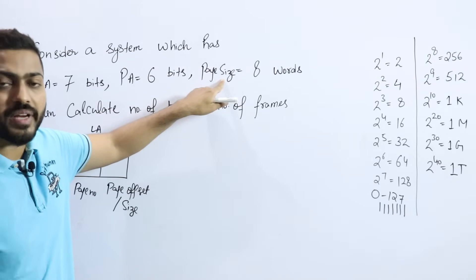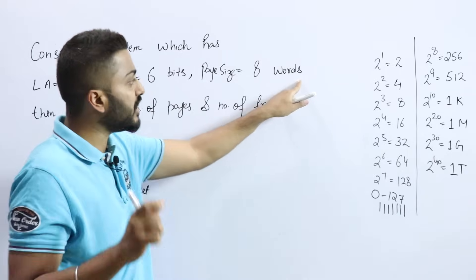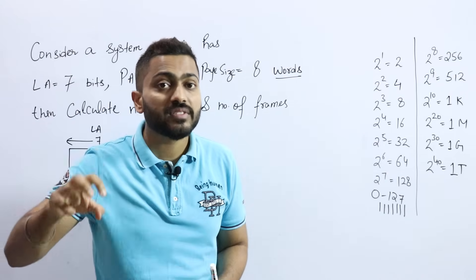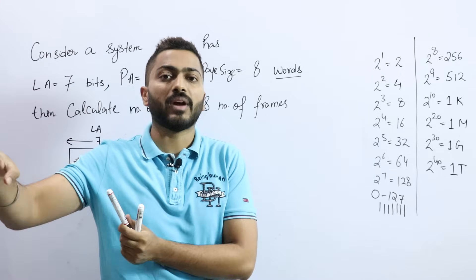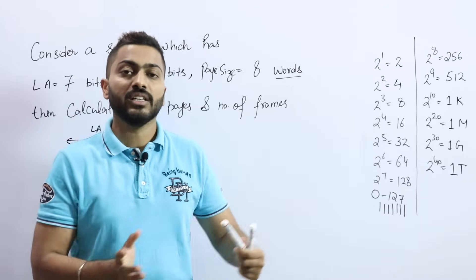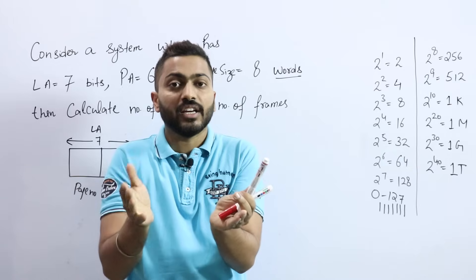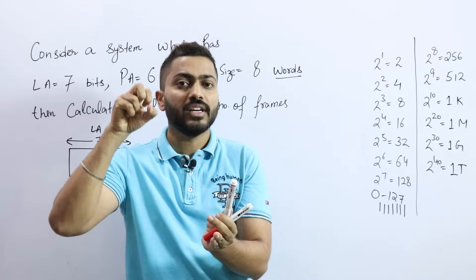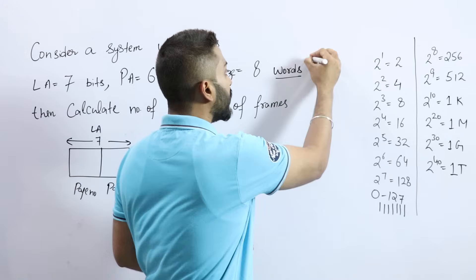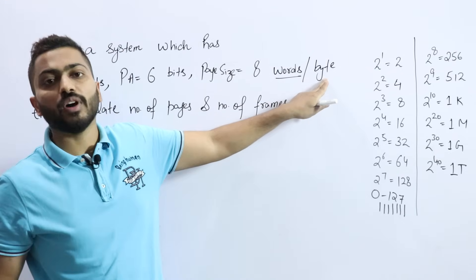The page size is given as 8 words. Here, 'word' is a unit of memory representation. We always talk about systems being 32-bit or 64-bit, meaning the word size varies by system. For numerical problems, if nothing specific is mentioned, we treat one word as equal to one byte.